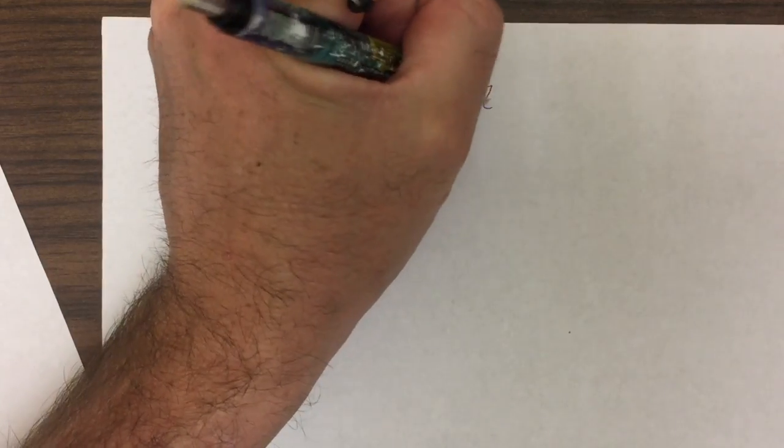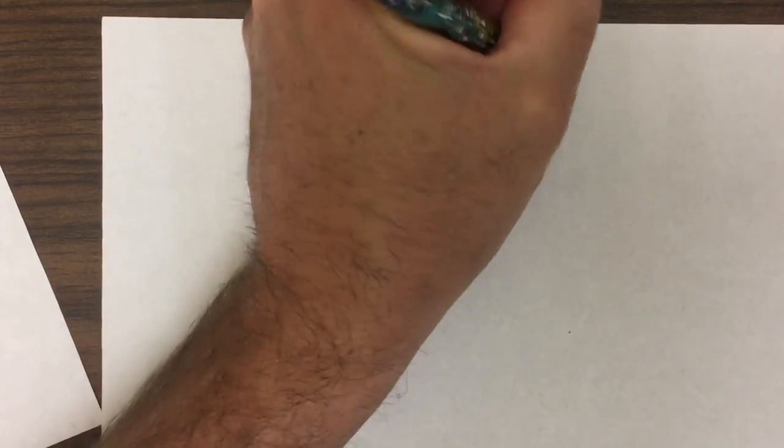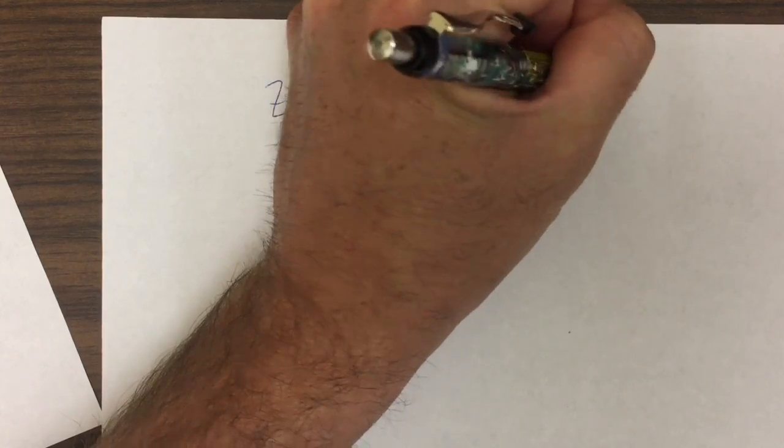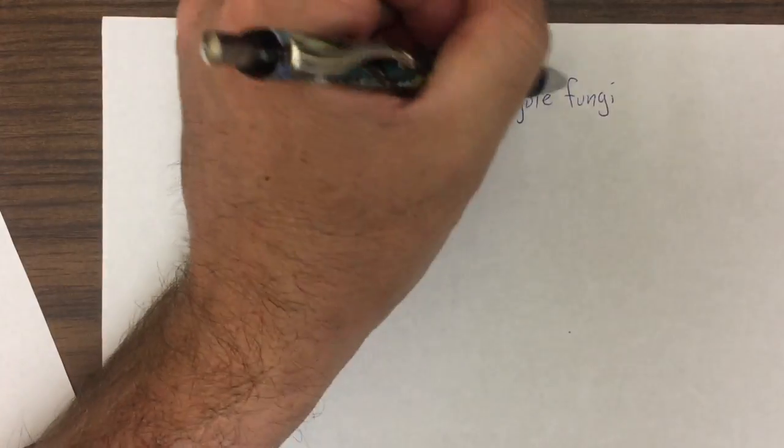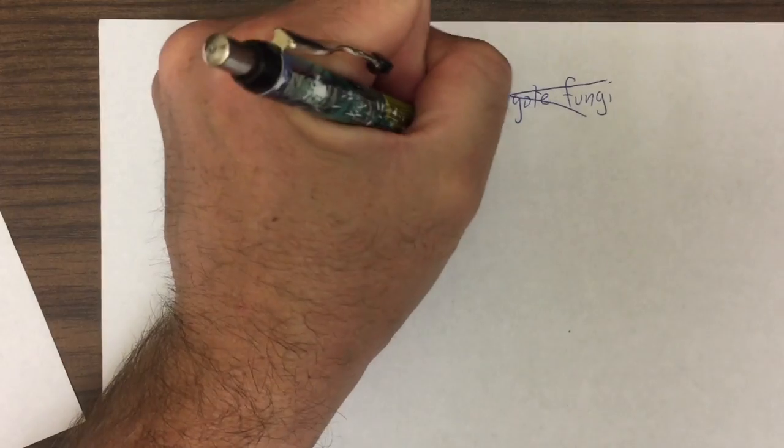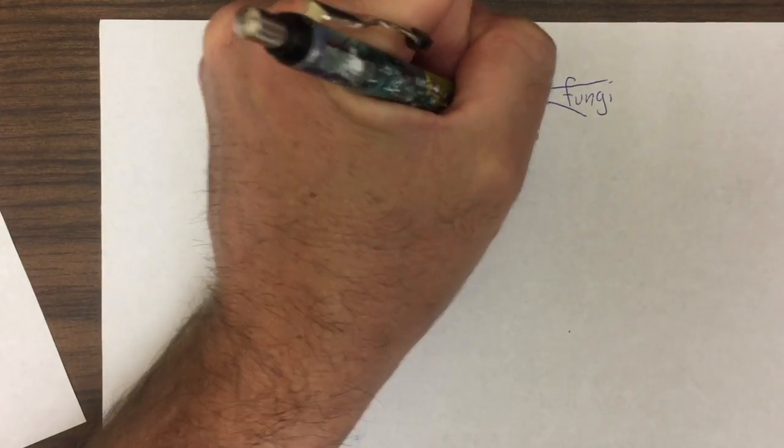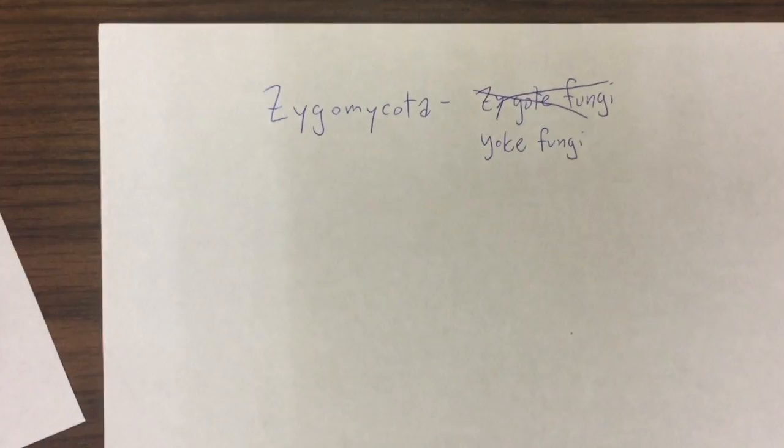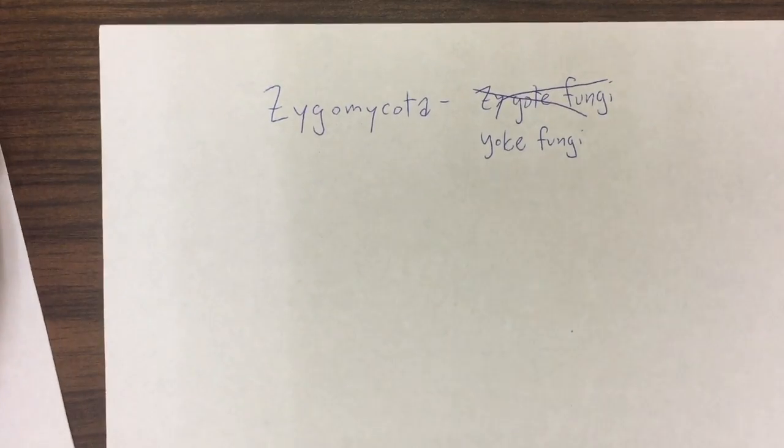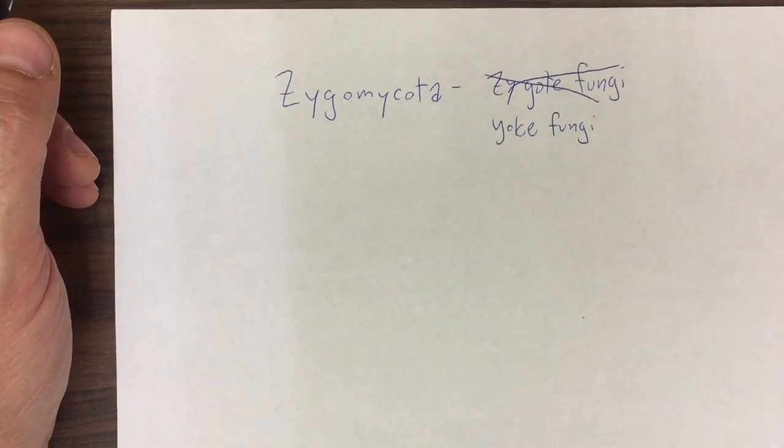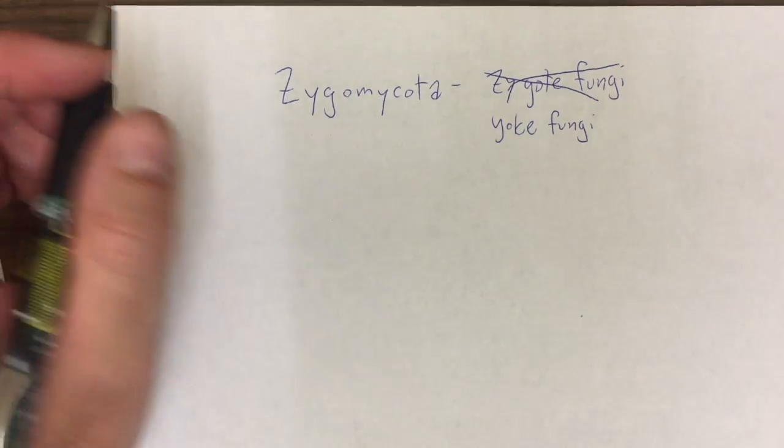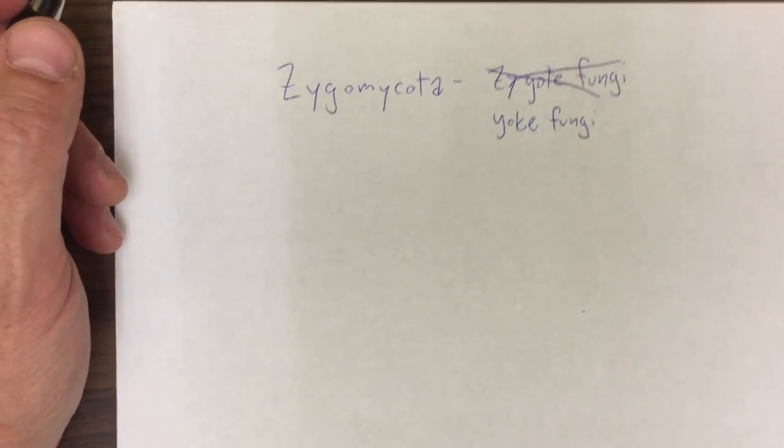These are sometimes referred to as the zygote fungi, but actually to mycologists, we call them zygomycetes or yolk fungi because of the shape of the zygosporangium, which is the sexual stage of this fungus.